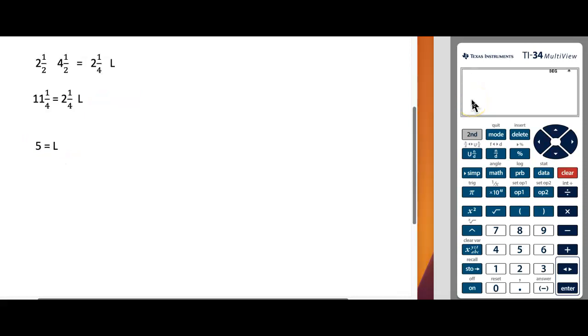To multiply 2 and a half times 4 and a half using a TI-34, if you'll notice on the second row of keys we have a UN over D. This is going to give us a mixed number. If I strike that key and then type in 2 and a half, I want to toggle over, arrow to the right, and then arrow down for my denominator.